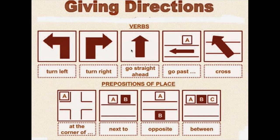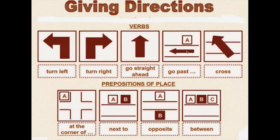So, giving directions. Para dar instrucciones es necesario tener en cuenta que también se pueden usar verbos. Turn left — girar a la izquierda. Turn right — girar a la derecha. Go straight ahead — seguir derecho. Go past — que pases por. Y la última: cross — por ejemplo, cross the avenue — cruzar la avenida.